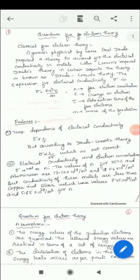See here, this classical free electron theory is having some failures. The first point is temperature dependence of electrical conductivity. According to experimental value, conductivity is inversely proportional to temperature. But according to Drude-Lorentz theory,